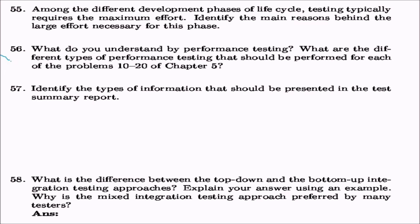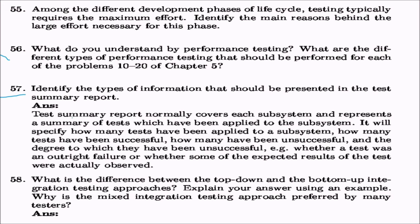Questions 55, 56, and 57 are of a similar type already covered. Question 57: identify the information that should be in a test summary report. It should cover each subsystem and summarize tests applied, specifying how many tests were applied, how many were successful, how many unsuccessful, and the degree of failure — whether a test was an outright failure or whether some expected results were observed. Questions 55, 56, and 58 are left as exercises.